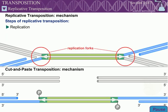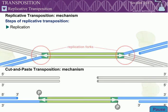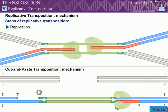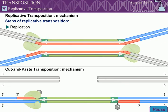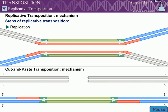The two DNA branches within this intermediate each have the structure of a replication fork. The DNA replication machinery can then assemble at one or both of the forks. The 3' hydroxyls of the nicked target DNA serve as primers for DNA synthesis. Replication proceeds through the transposon sequence, generating two copies of the transposon DNA. Once again, the staggered attack of the target DNA results in target site duplications flanking the element.